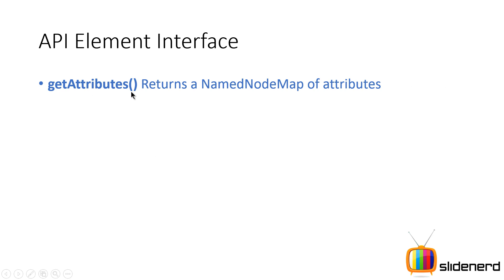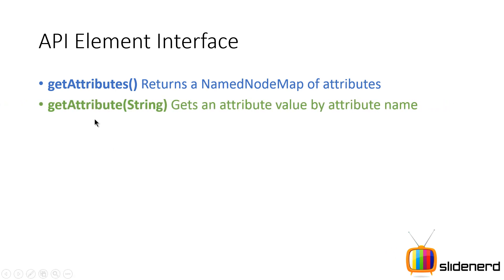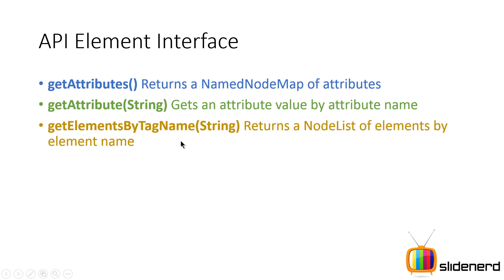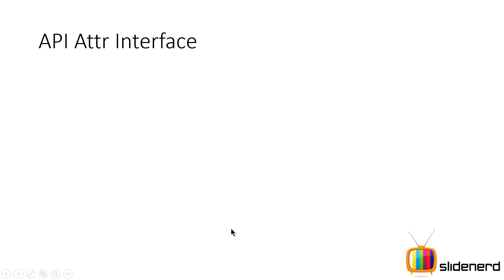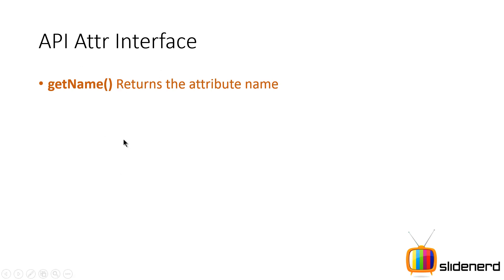The Element interface has methods like getAttributes, which returns a list of attributes that a particular element has. You can get an attribute by a particular name, and you can get elements by tag name to get a NodeList of elements. There's also getTagName that gives you the element's tag name. Then there's the Attr interface — for any attribute you can get its name by calling getName and its value by calling getValue.